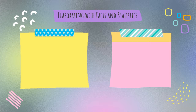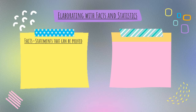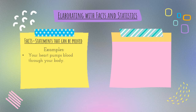Now let's talk about facts and statistics in your writing. In your descriptive essay, you would have probably included a little bit of these facts and statistics as you were writing, and you may or may not have known that that's what you were doing. Facts are statements that can be proved — something that you know for certain. There's some kind of written record and you're able to prove that this is true. For example, your heart pumps blood through your body. This is a true statement, this is a fact. It's something that you can prove.